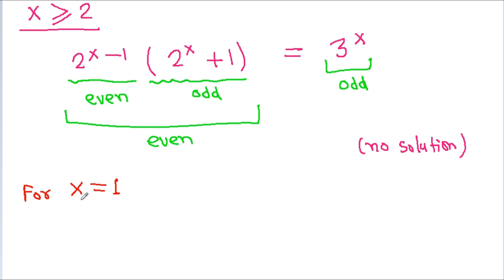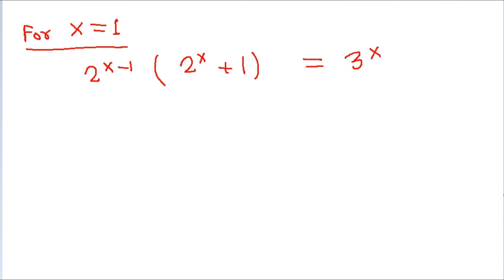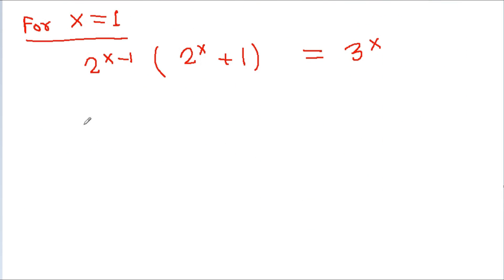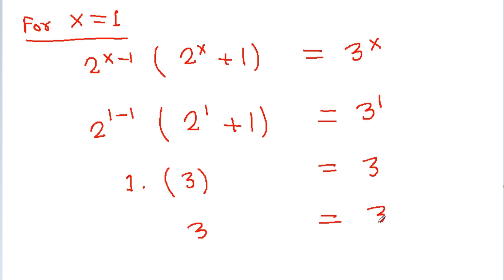For x = 1: substituting into 2^(x-1)(2^x + 1) = 3^x gives 2^0 · (2 + 1) = 3^1, which is 1 × 3 = 3. We get 3 = 3, so x = 1 is a solution.